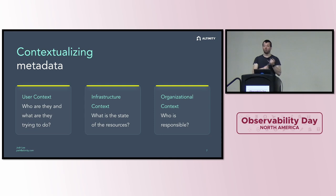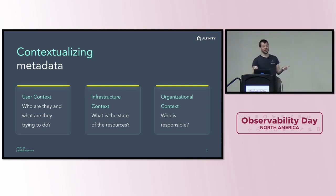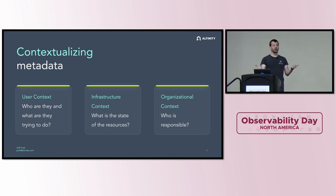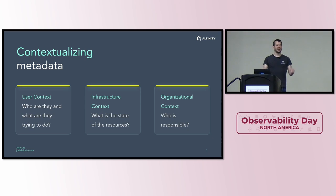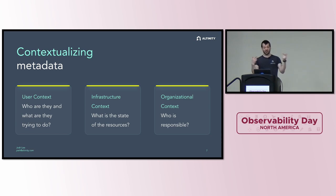More importantly, what was the user trying to do? That's what you'll care about on your debugging journey. Then you want infrastructure context — this is very automatable. We have resource detectors in OpenTelemetry that you can use in your SDKs, in the OpenTelemetry Collector, to automatically annotate all your telemetry with relevant signals from the environment it's running in. It's very good to automate because you want it to be as consistent as possible.